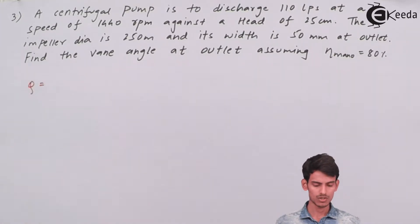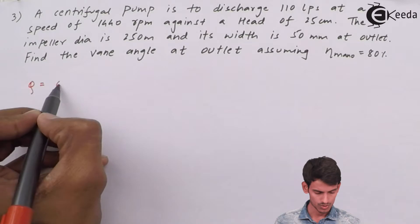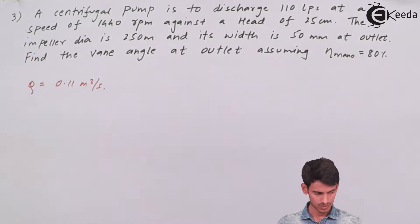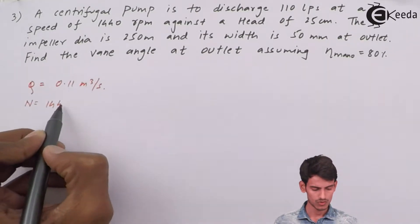Discharge is 110 liters per second, but we need it in meter cube per second. You cannot substitute the value of discharge in LPS; it has to be in SI units. So 110 divided by 1000 comes out to 0.11 meter cube per second. The value of rpm is given as 1440.